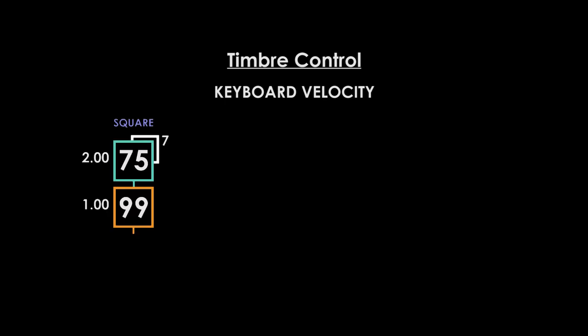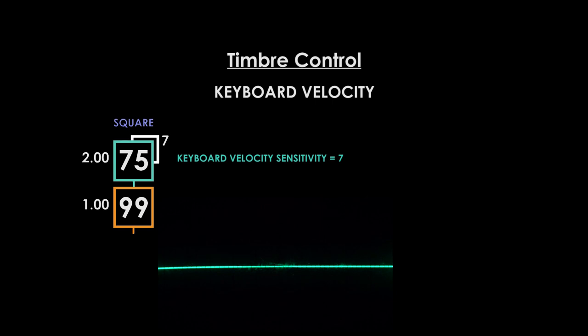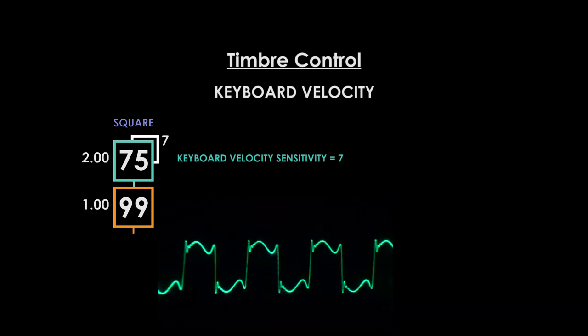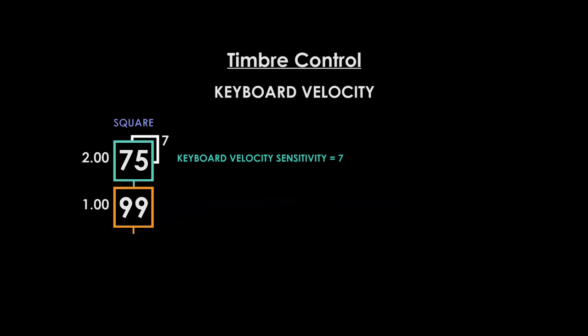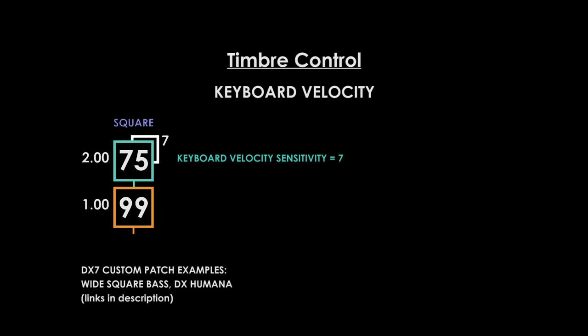Reset your MF Square patch by reselecting it. Select your modulator, edit keyboard velocity sensitivity, and increase the value. Now the modulator's output level will be determined by how quickly you press a key. This way of controlling harmonic brightness is great for piano, electric piano, and clavinet sounds that require this type of tactile performance control. For an example see my custom patch videos Wide Square Bass and DX Humana.